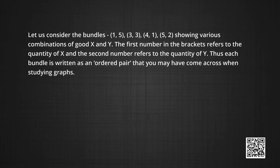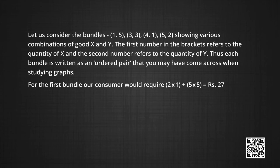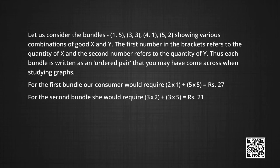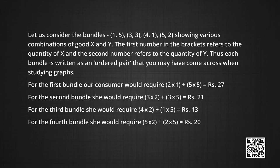Let us consider the bundles (1,5), (3,3), (4,1), and (5,2), showing various combinations of good X and good Y. The first number in each pair is the quantity of X and the second is the quantity of Y. For the first bundle, the consumer requires 2×1 + 5×5 = 27 rupees. For the second bundle, she requires 21 rupees. For the third, 13 rupees, and for the fourth, 20 rupees.